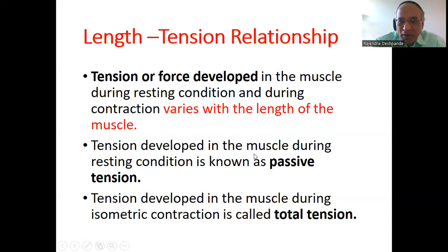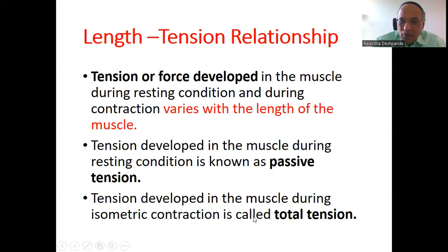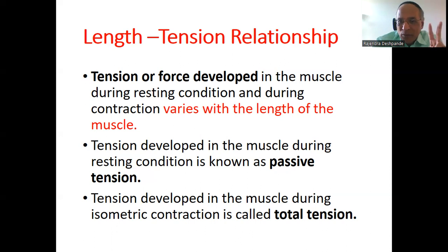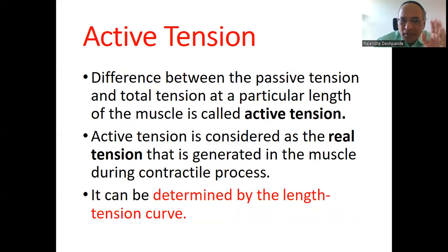Tension developed in the muscle during the resting condition is known as passive tension. Tension developed in the muscle during isometric contraction is called total tension. So these are the two terms: one is passive tension and another is total tension.